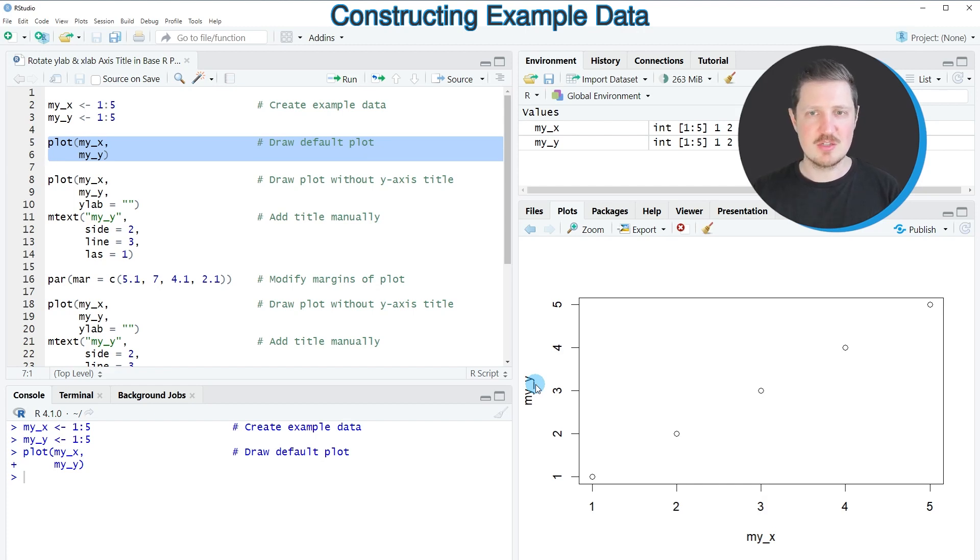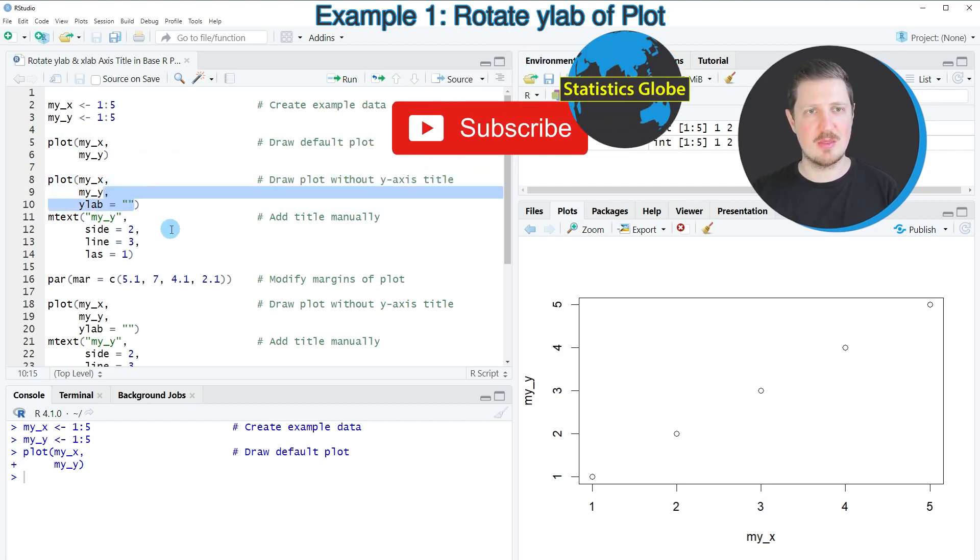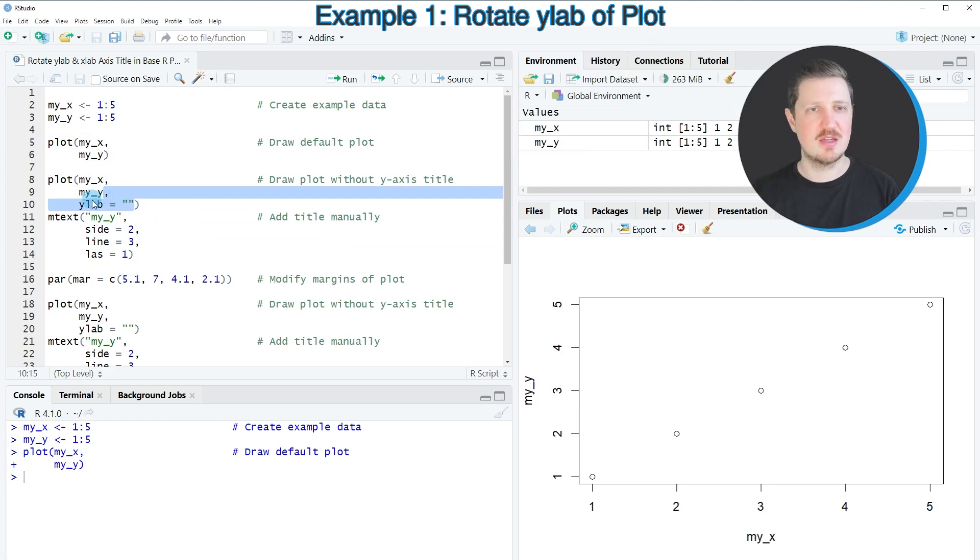Now let's assume we want to rotate the y-axis label title myy. We can apply the code in lines 8 to 14. First, call the plot function again as shown in lines 8 to 10. However, this time specify the ylab argument to be equal to an empty character string. After running lines 8 to 10, the y-axis title disappears.